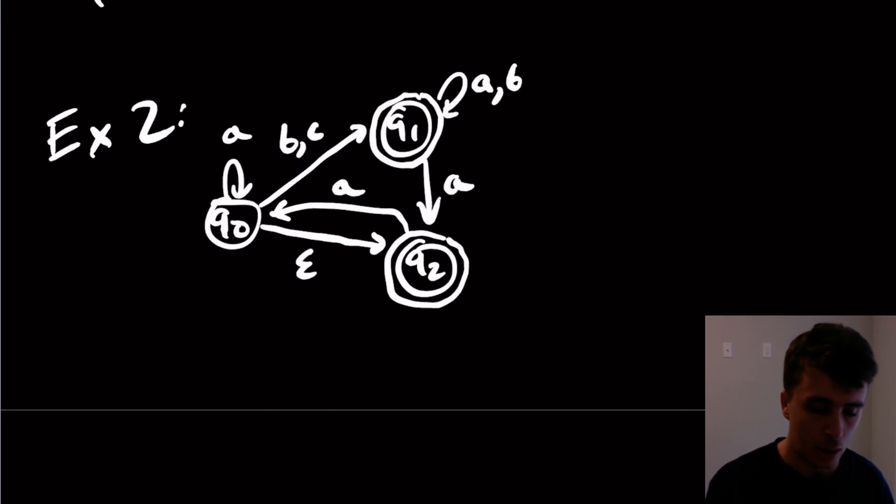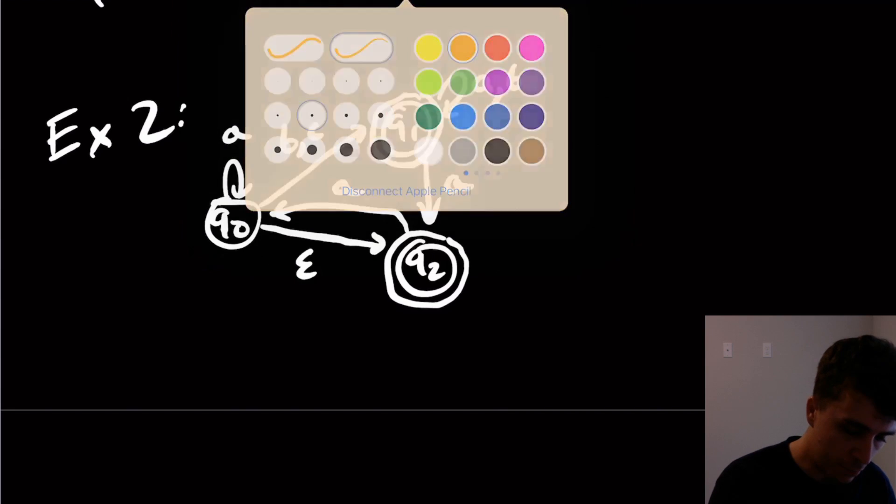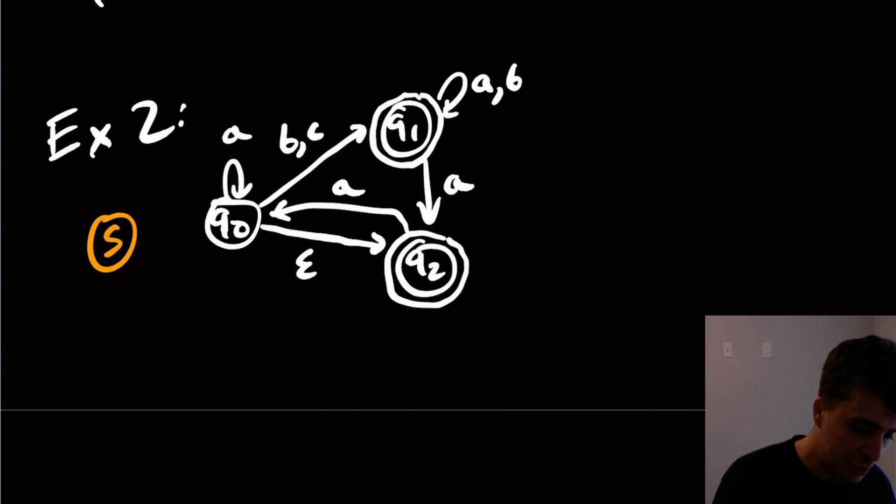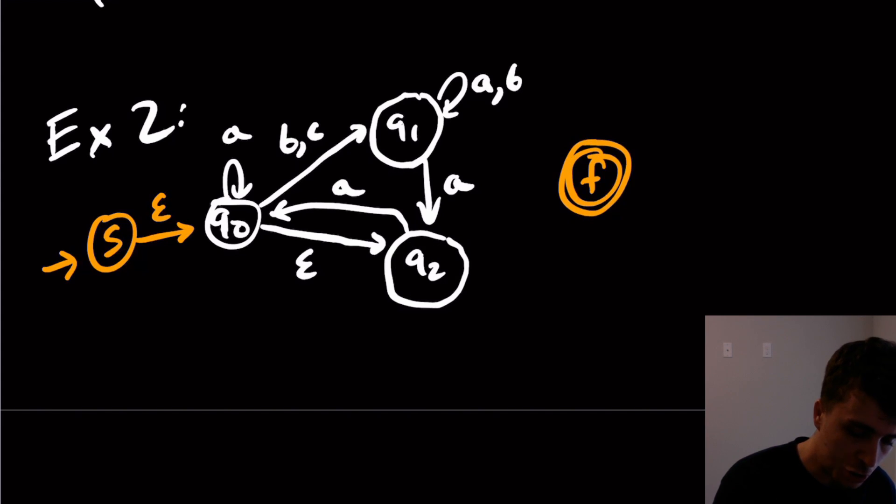So then now, of course, we got to do our construction right here, which involves making a brand new start state. Again, I'm going to call it S. And here, what I'm going to do is we're going to make these non-final again, make our final state F just like before, epsilon transitions over.